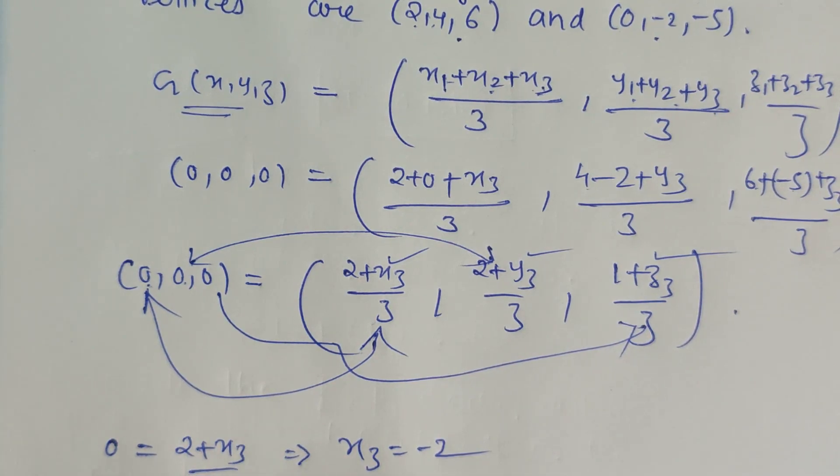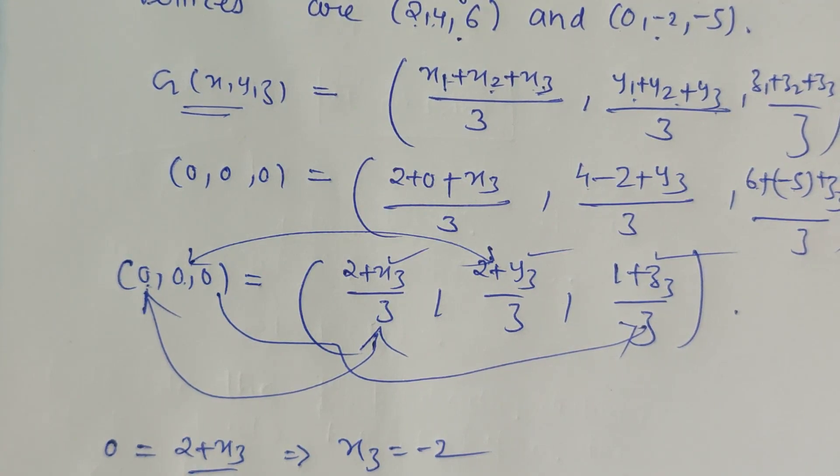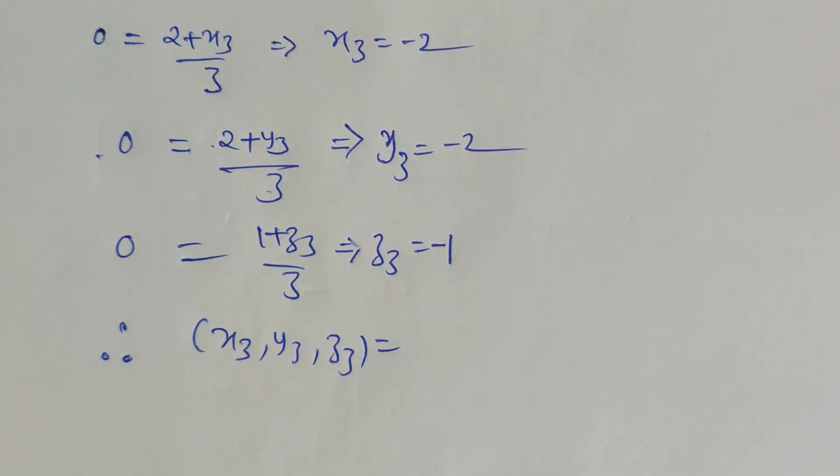Therefore the third coordinate x3,y3,z3 is equal to (-2,-2,-1).